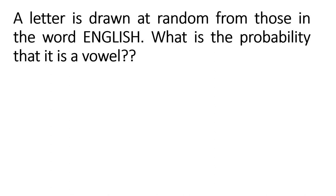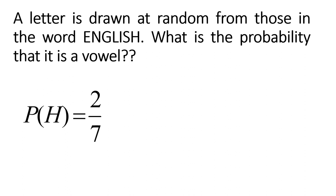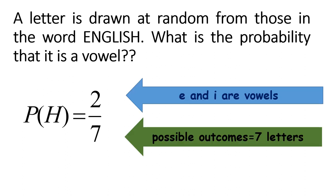A letter is drawn at random from those in the word English. What's the probability that it is a vowel? The answer is 2 over 7. Because there are only 2 vowels in the word English — that's E and I — and there are 7 letters in the word English.